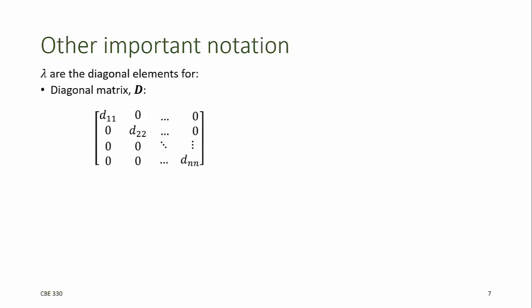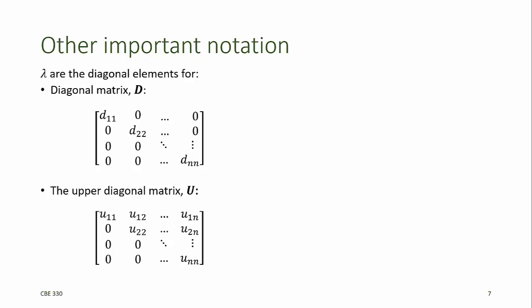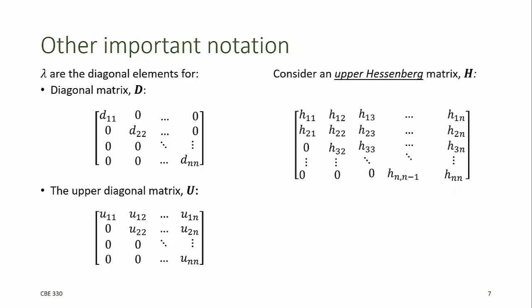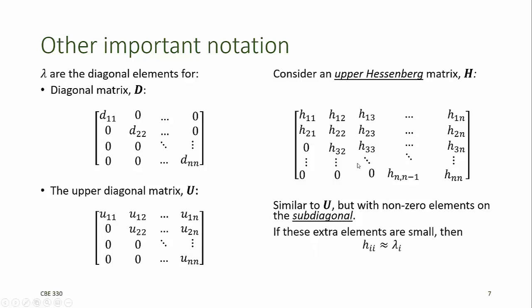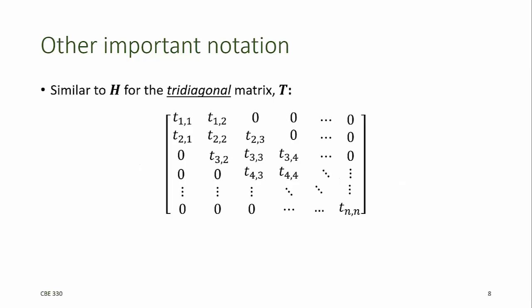The eigenvalues are always the diagonal elements of a diagonal matrix D and an upper triangular matrix U. Now consider an additional type of matrix, which we'll call an upper Hessenberg matrix H. This is very similar to U, except for the non-zero elements on the sub-diagonal. If these extra elements are small, then the diagonal elements approximate the eigenvalues of the matrix. Similarly, if our matrix is tri-diagonal and the off-diagonal elements are small, then the diagonal elements approximate the eigenvalues of the matrix.